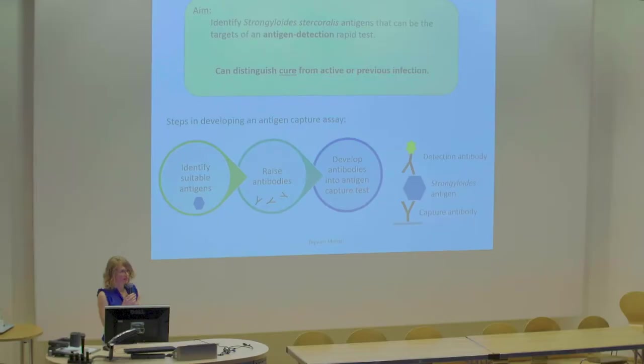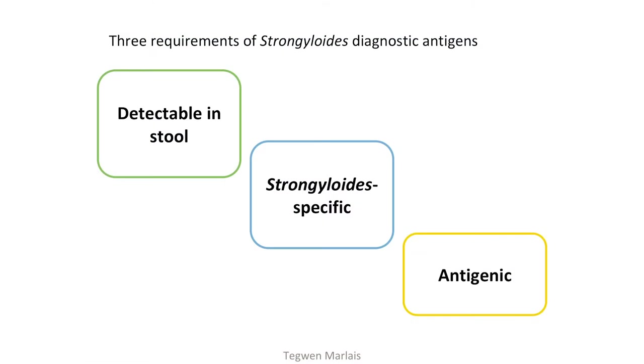The steps in developing this antigen capture assay are to identify suitable antigens — these might be a crude lysate or a particular named antigen — raise antibodies to those, and then develop these into a capture assay where one antibody is immobilised on a solid phase. You apply your sample, which may or may not contain the antigen, and then apply a detection antibody to visualise the result. My work is at the beginning stage of identifying suitable antigens.